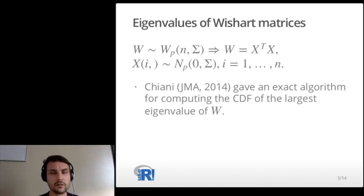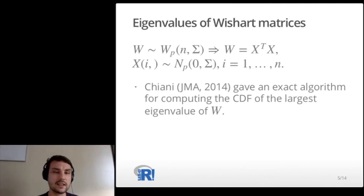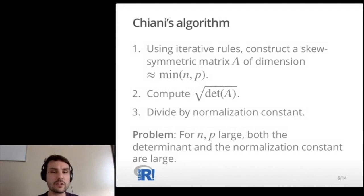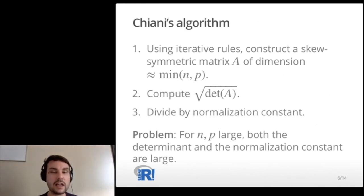It's been a very hard problem in general, but in 2014 in the Journal of Multivariate Analysis, Kiani gave an exact algorithm for computing the CDF of the largest eigenvalue of a Wishart matrix. In the paper, the algorithm's first step is to construct a skew-symmetric matrix A, whose dimension is related to the minimum value of n and p. The second step is to compute the determinant of A and take the square root. The third step is to divide this determinant by a normalizing constant.